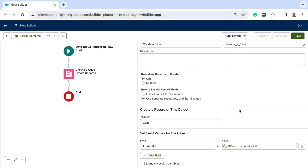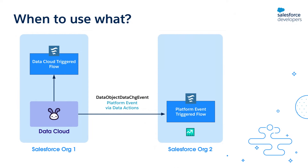Now how are these different, and when should you choose what? It's actually pretty simple. If the flow must run in the same org where Data Cloud is provisioned, you can use data cloud triggered flow. If the flow must run in a different org, then you choose data actions. Moreover, data actions can be used for more than just flows — when the data action fires a platform event, you can subscribe to it from anywhere, not just within flows. And remember, along with firing platform events, data actions can also send events to webhooks and marketing cloud as well.